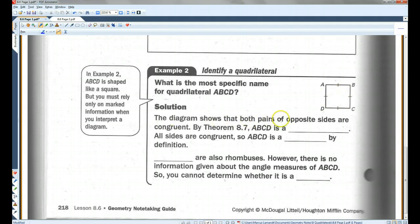The diagram shows that both pairs of opposite sides are congruent. By theorem 8.7, ABCD is a parallelogram. All the sides are congruent, so ABCD is a rhombus by definition. It looks like you could call it a square.